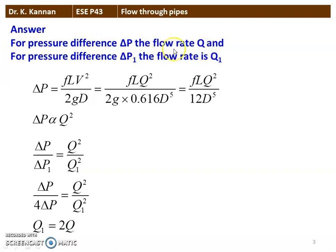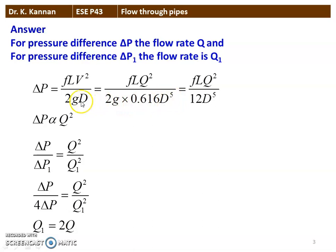For pressure difference delta P, the flow rate is Q. For pressure difference delta P1, the flow rate is Q1. Using the Darcy-Weisbach equation, delta P equals FL V² / 2GD. Substituting velocity V as Q divided by (π/4 × D²), and simplifying, we get delta P proportional to FL Q² / (12 × D⁵). Therefore, delta P is proportional to Q².